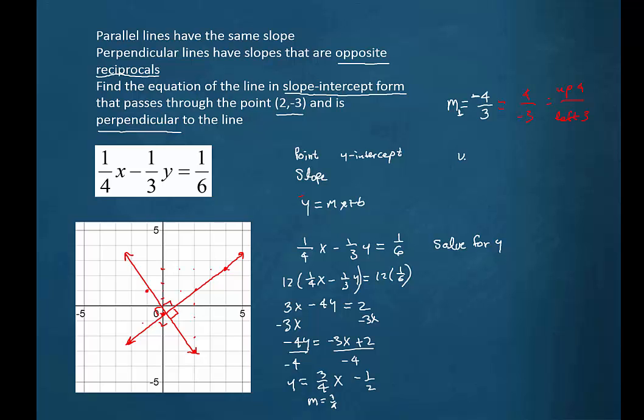Now using this form that we're familiar with, y equals mx plus b, we have an ordered pair we call it xy that satisfies this equation, and we have a slope minus four thirds. So we'll plug in minus 3 for y, minus four thirds for m, and then 2 for x and solve for b.